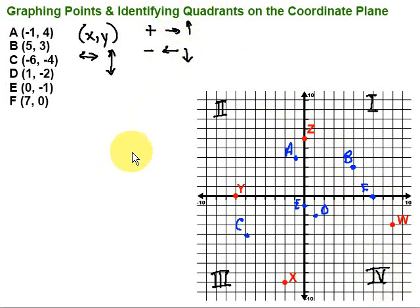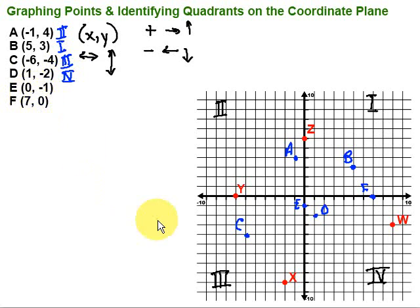Now let's label the quadrants in which all of those are located. Point A is in quadrant 2. Point B is in quadrant 1 — it's positive, positive. Point C puts us in quadrant 3. Point D is in quadrant 4. Points E and F are not located in any quadrant because they're on the axes. Point E is on the y-axis, and point F is on the x-axis, so those are not located in any of the quadrants.